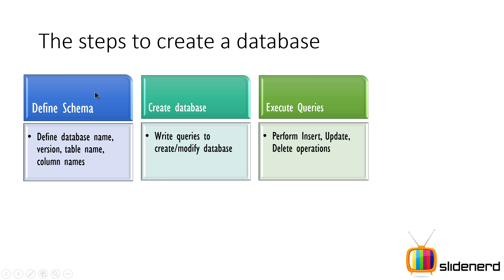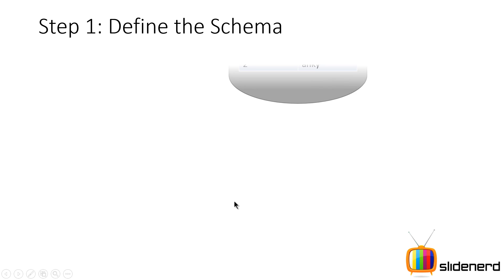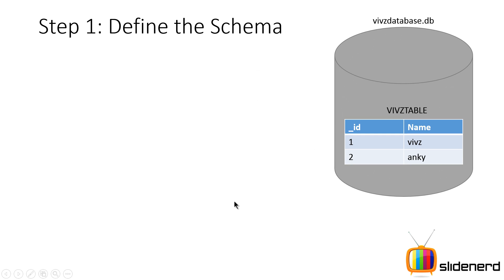Let's go to Step 1 and try to figure out how we can work with the schema, and then in the upcoming videos we'll talk about the second and third steps in more detail. Let's say I have a simple database called wivsdatabase.db — that is the format for an SQLite database file on your mobile device. Inside it there is a table called wivs table, which has two columns: _id and name.